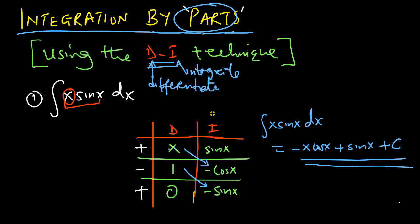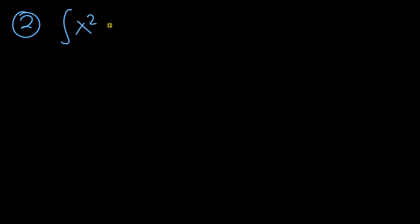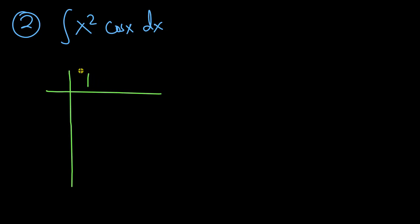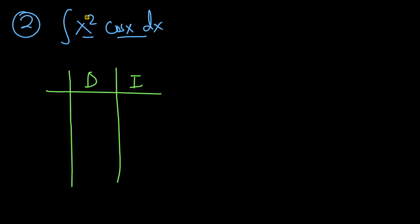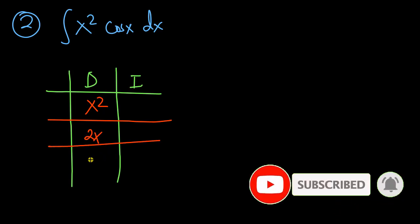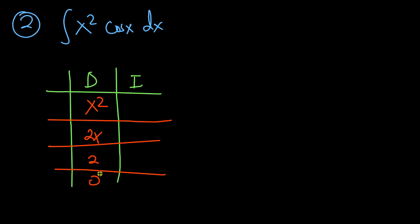You can see that the DI method is really fast in evaluating such integrals. Let's proceed with another example: the integral of x²·cos(x)dx. I begin by drawing a table with D and I columns. X squared can be differentiated up to 0, so it goes in the D column. If I differentiate x² I get 2x, then 2, then 0 — so I stop there.